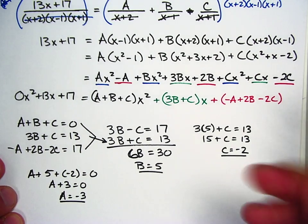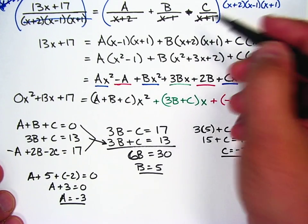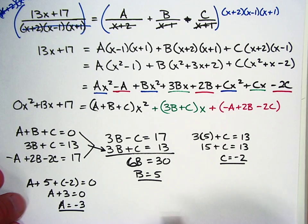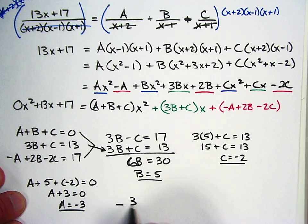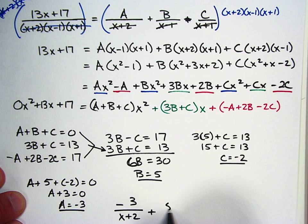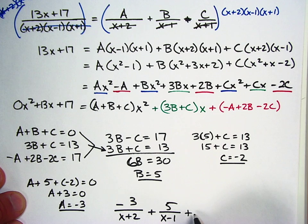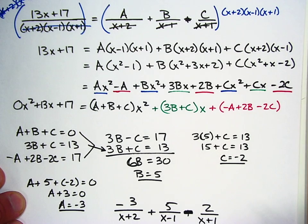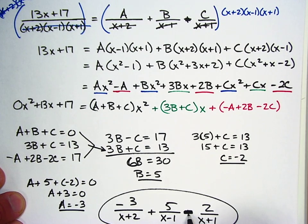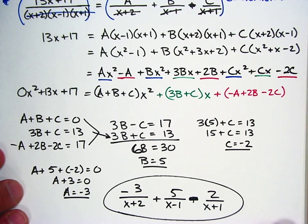So now, my final answer, if I go back up here, I'm just going to write it down here at the bottom. I'm going to say negative 3 over x plus 2 plus 5 over x minus 1, actually I should change that to a minus, 2 over x plus 1. This minus is because it was plus negative 2, and instead of writing it twice, that's what I got.